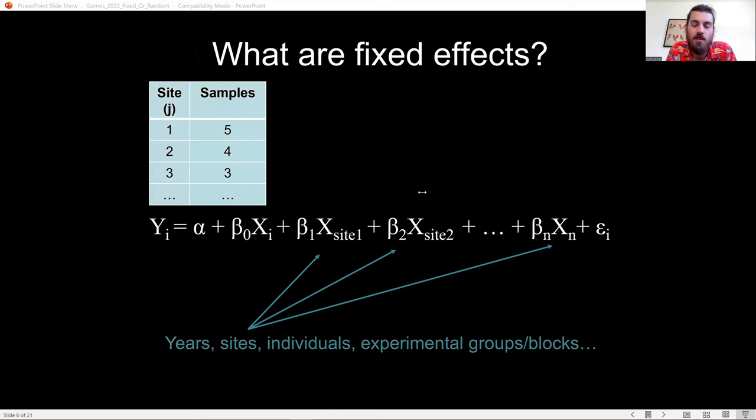When we fit these grouping variables as fixed effects, we essentially create a dummy variable for each level and independently estimate coefficients for each of those levels, leading to many, many unrelated estimates.